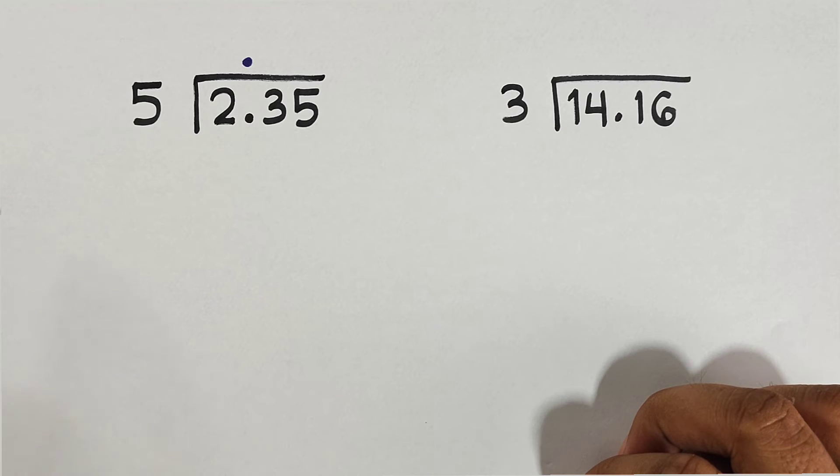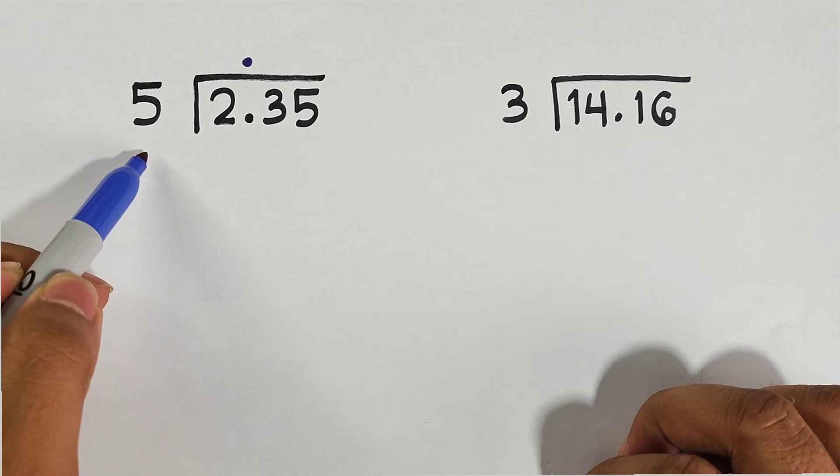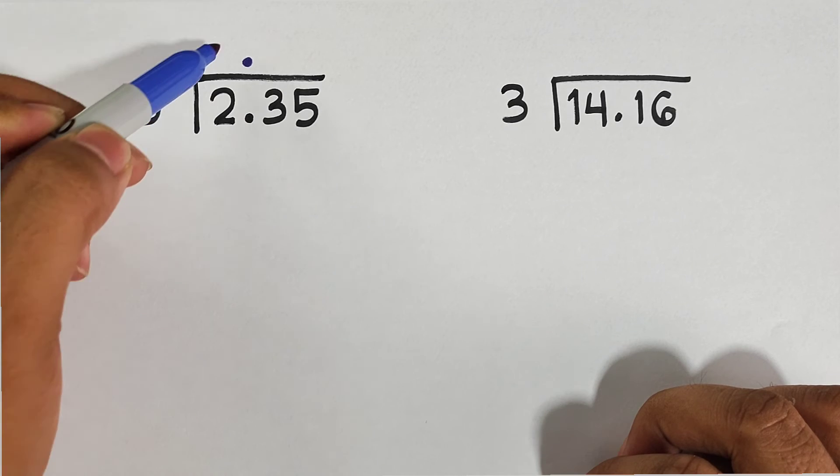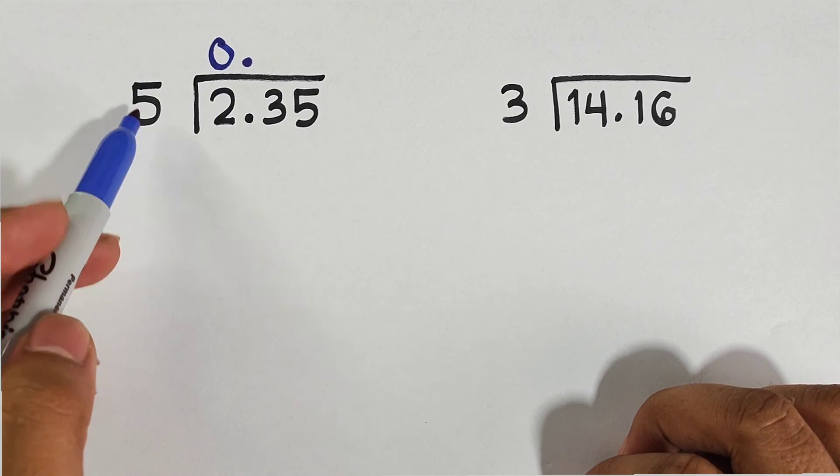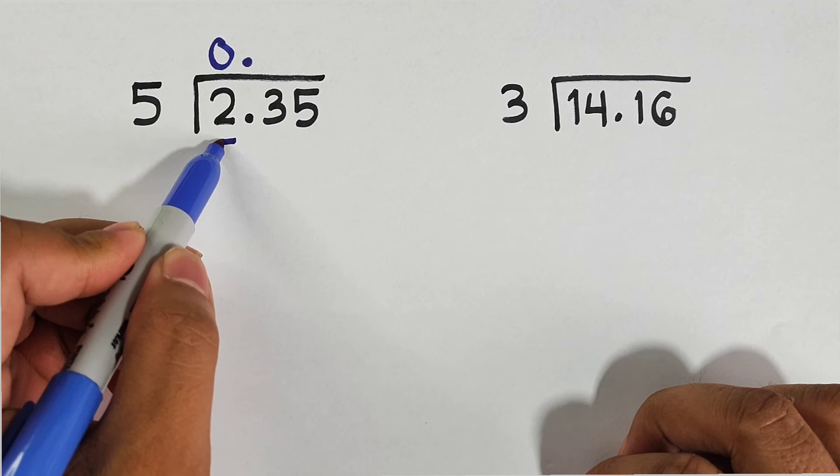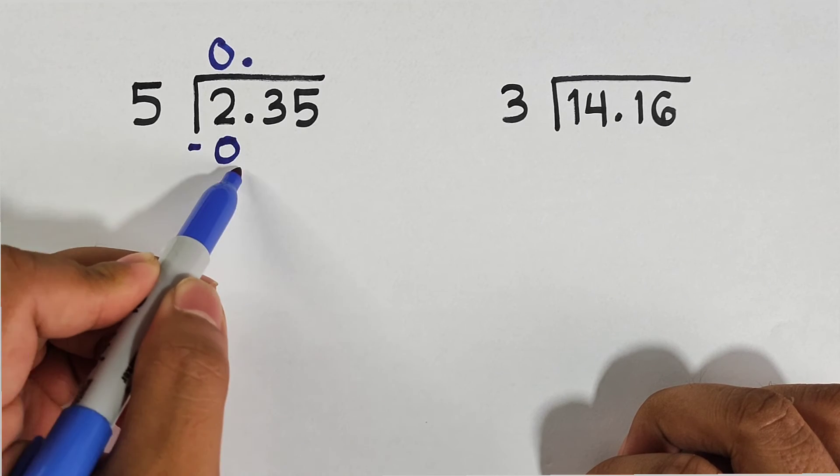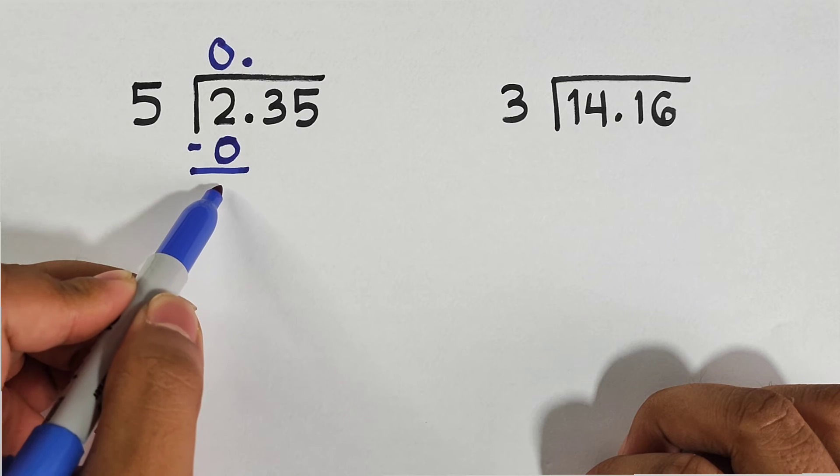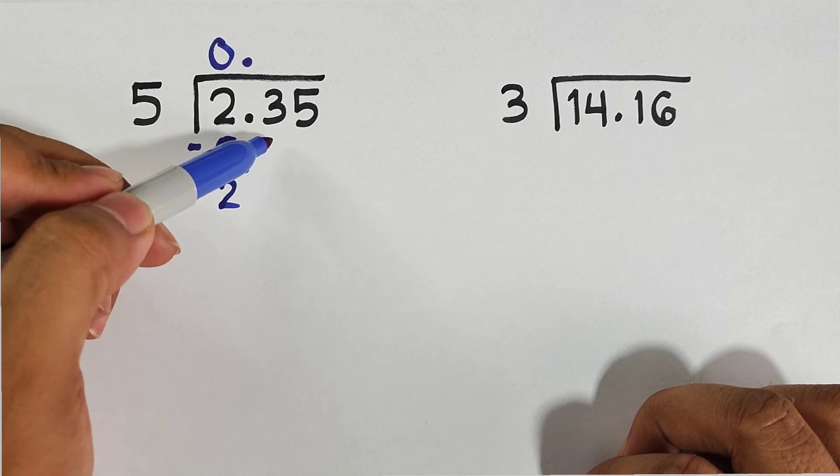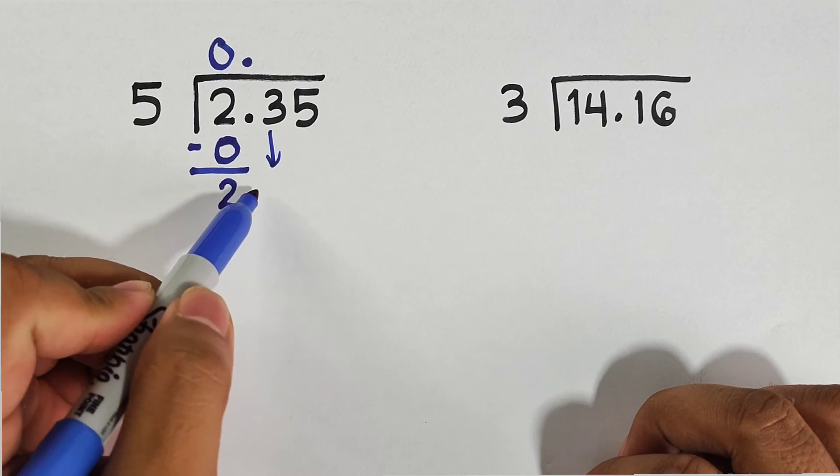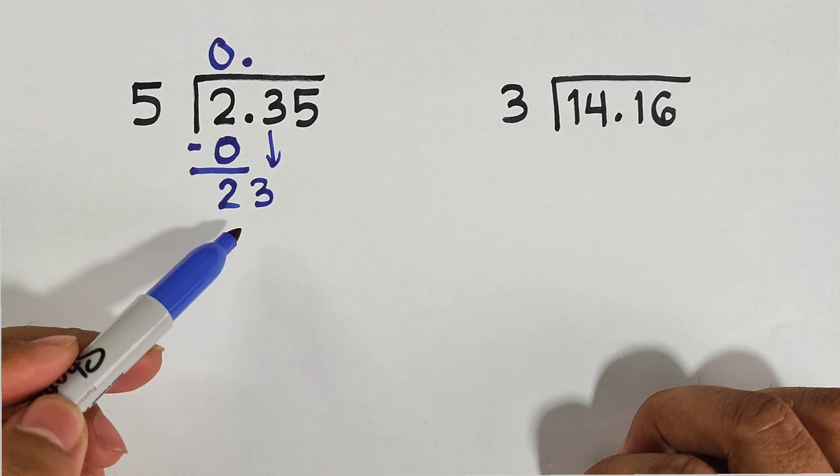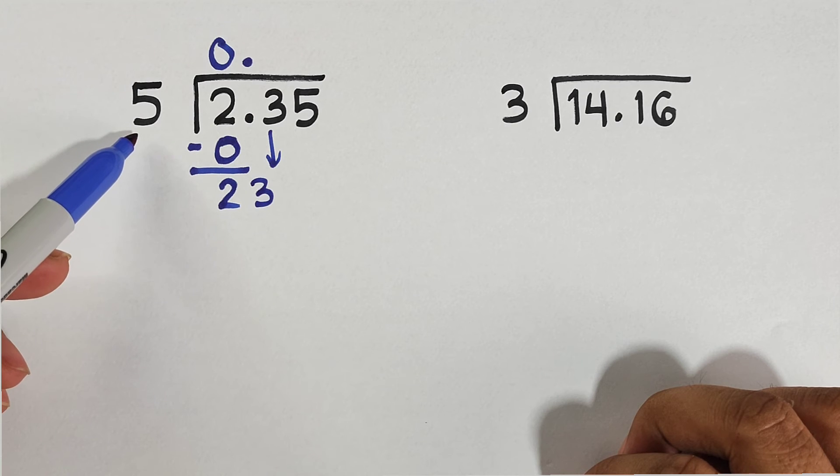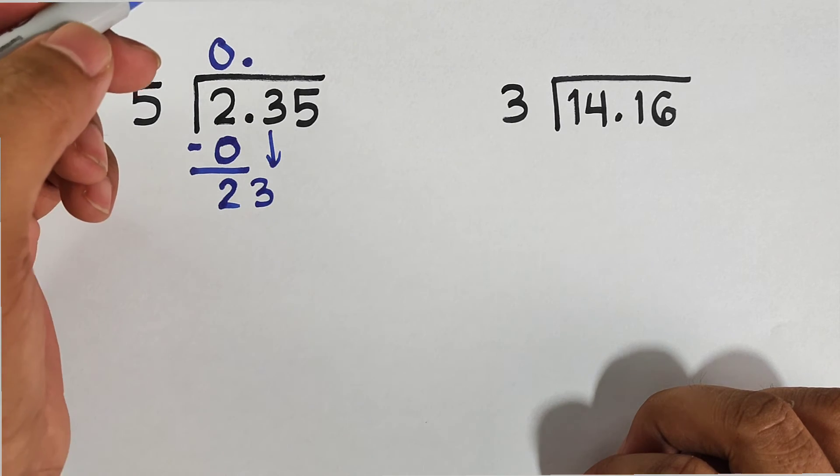Let's start dividing. 2 divided by 5 is 0. 0 times 5 is 0. Subtract 2 minus 0 is 2, and we will bring down this number 3. So now our new dividend is 23. 23 divided by 5, this is equal to 4.